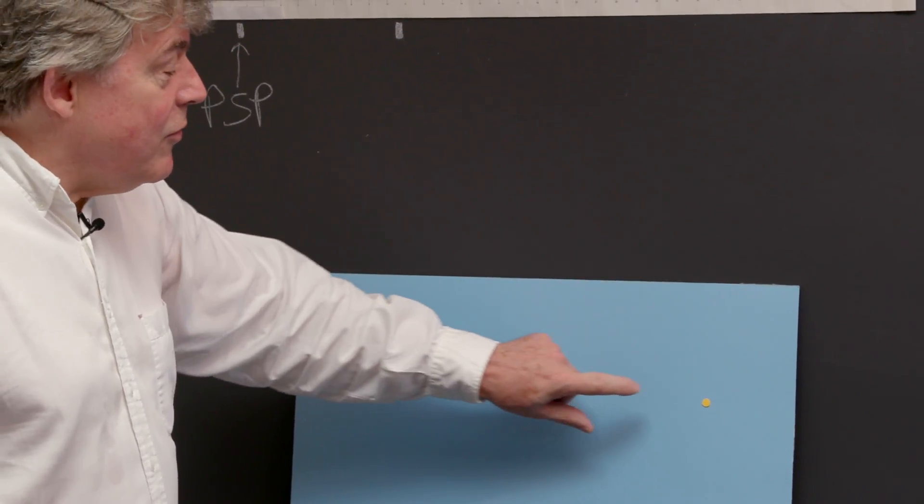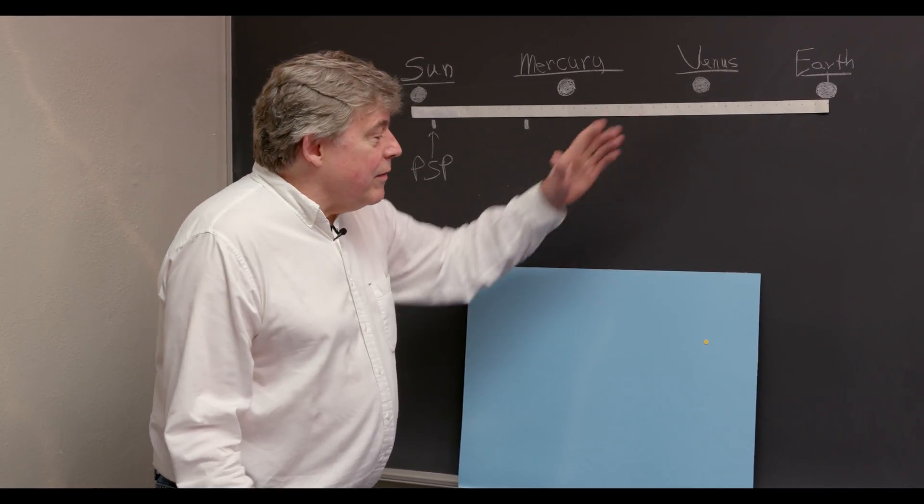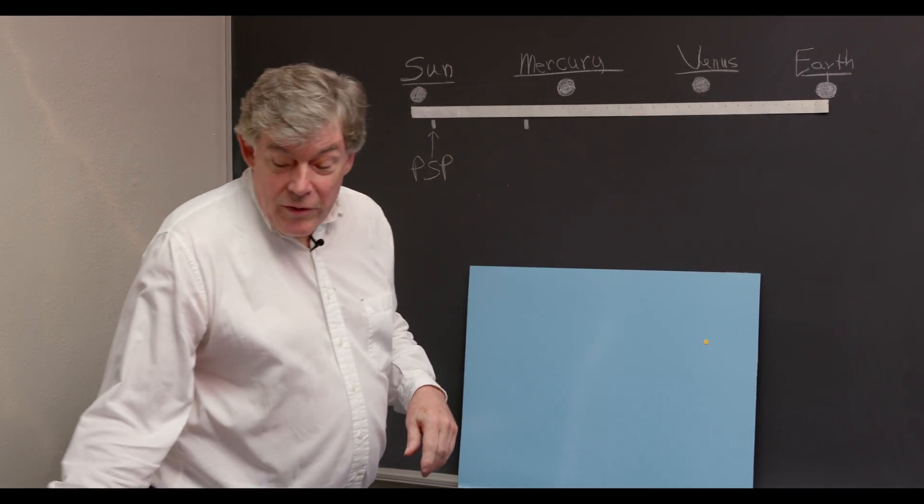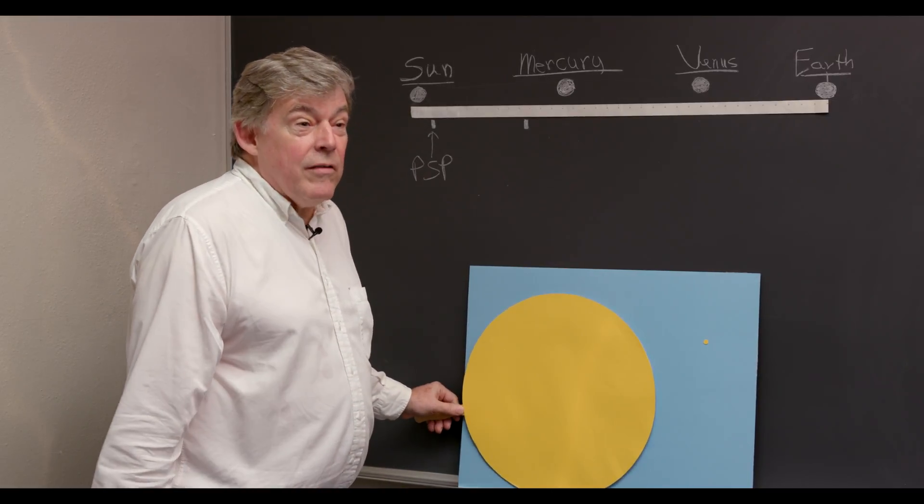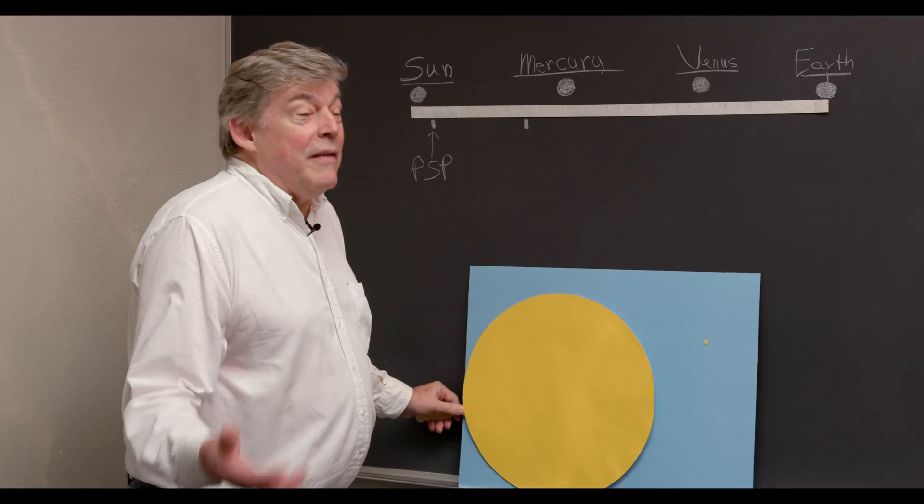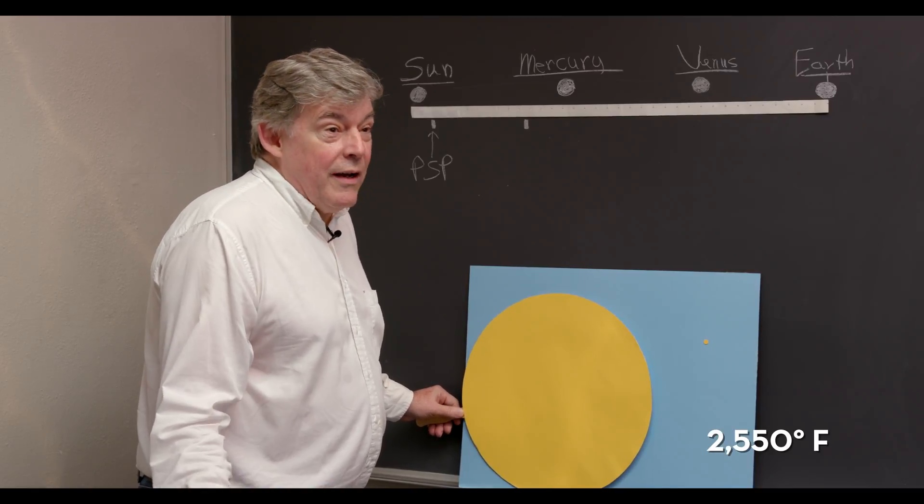So if you imagine that this is the size of the Sun in our sky today, here at planet Earth, when Parker Solar Probe goes close to the Sun it'll be a lot bigger. It'll be 500 times bigger than the Sun. It'll be 500 times hotter than the Sun, so it's going to be hot.